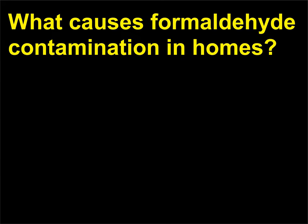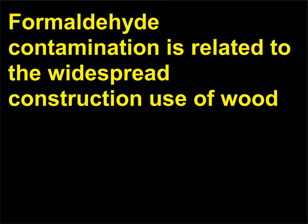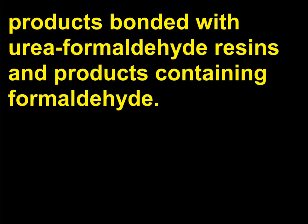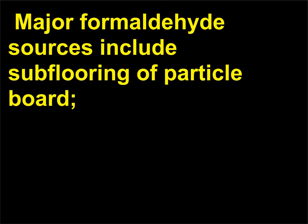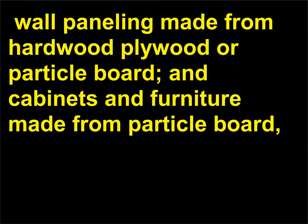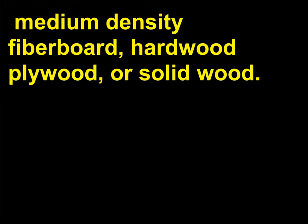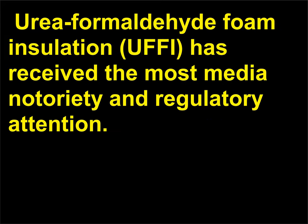What causes formaldehyde contamination in homes? Formaldehyde contamination is related to the widespread construction use of wood products bonded with urea formaldehyde resins and products containing formaldehyde. Major formaldehyde sources include subflooring of particle board, wall paneling made from hardwood plywood or particle board, and cabinets and furniture made from particle board, medium-density fiberboard, hardwood plywood, or solid wood. Urea formaldehyde foam insulation (UFFI) has received the most media notoriety and regulatory attention.